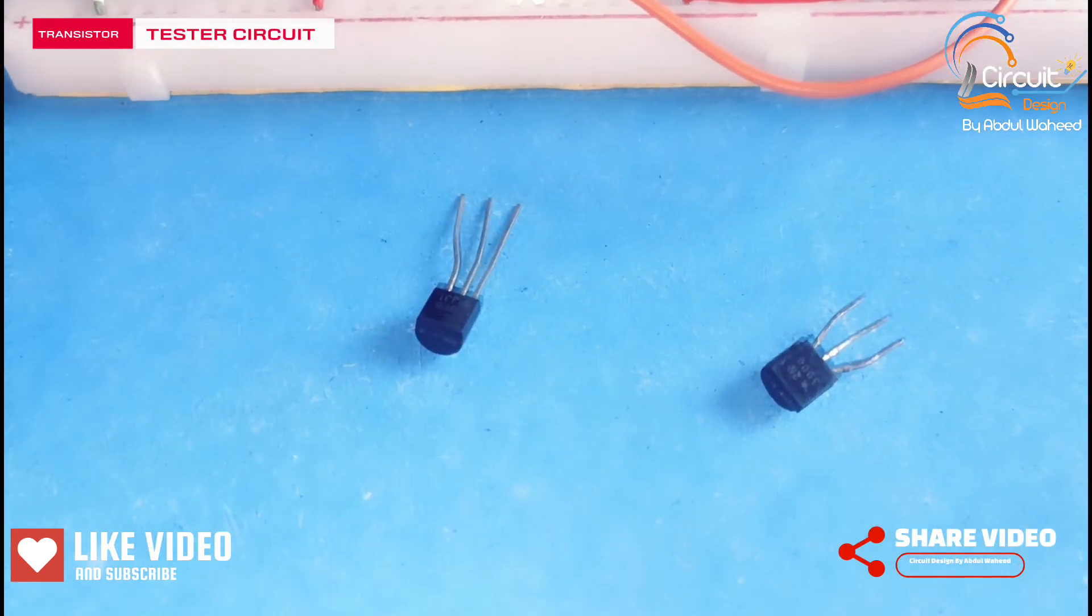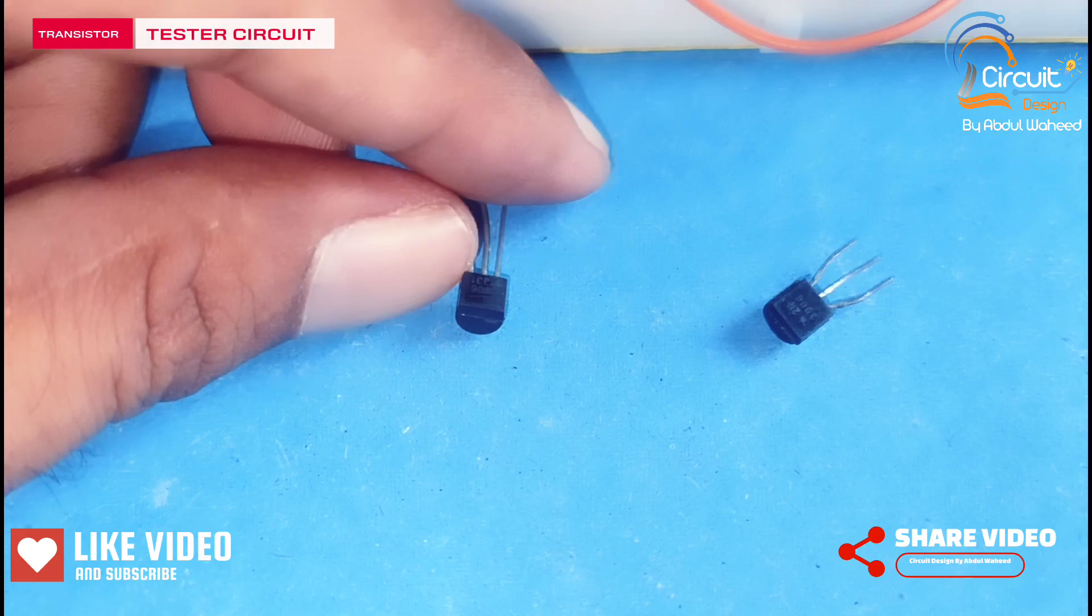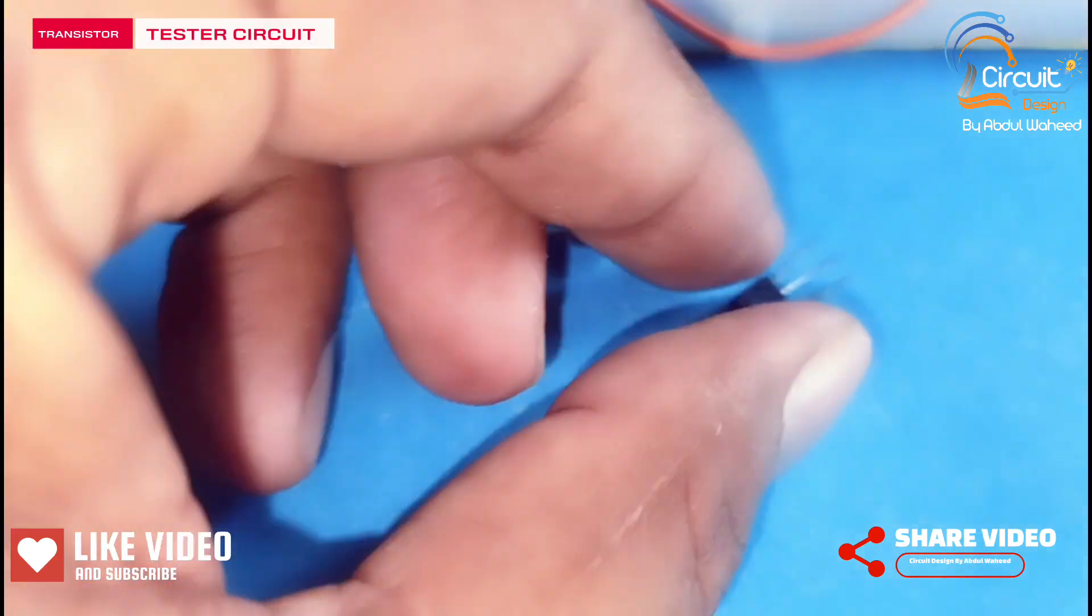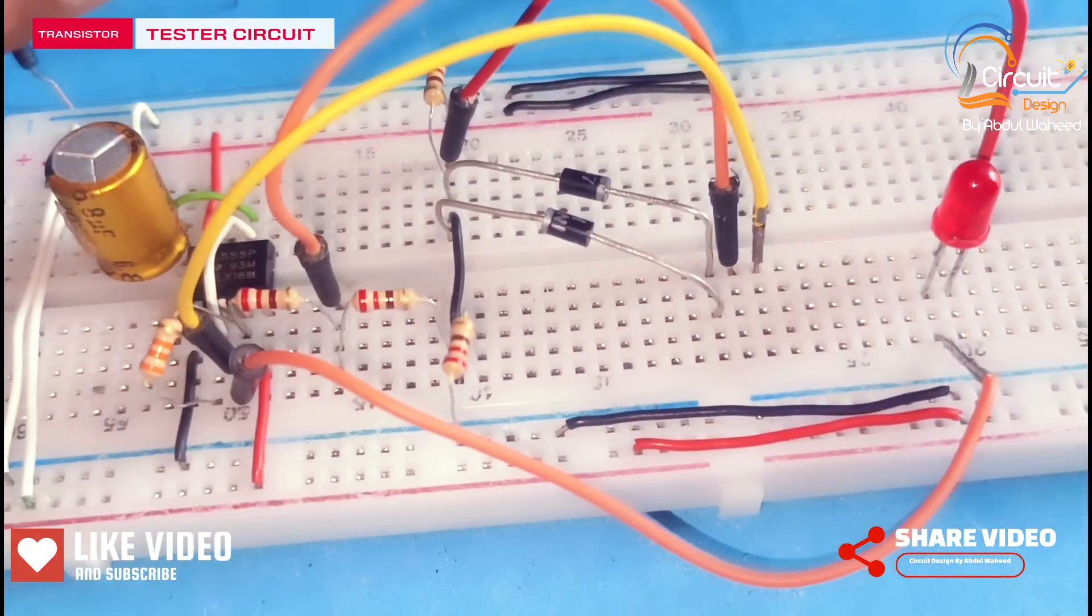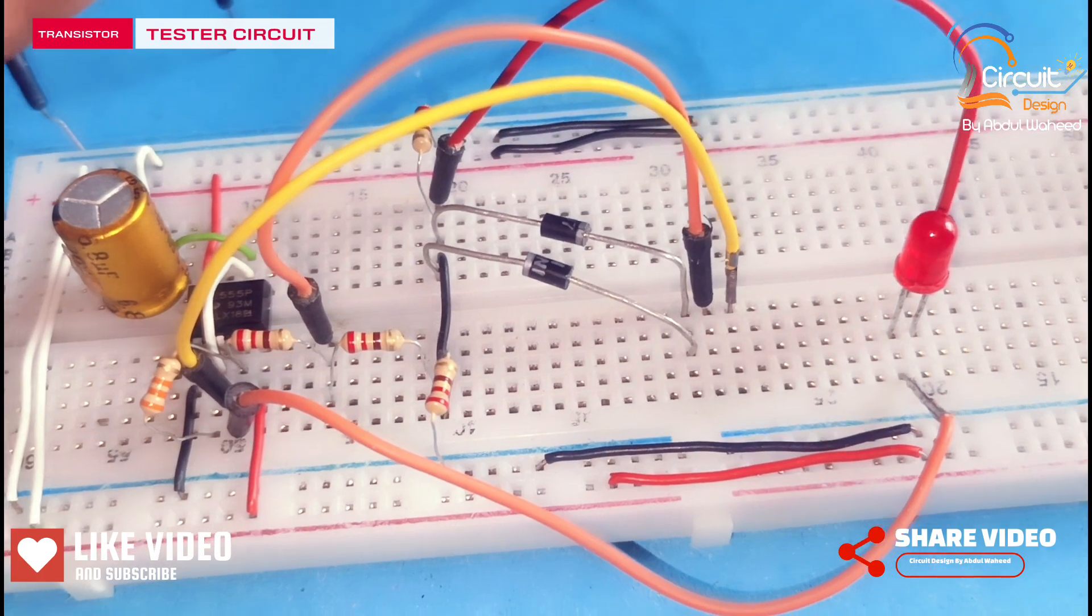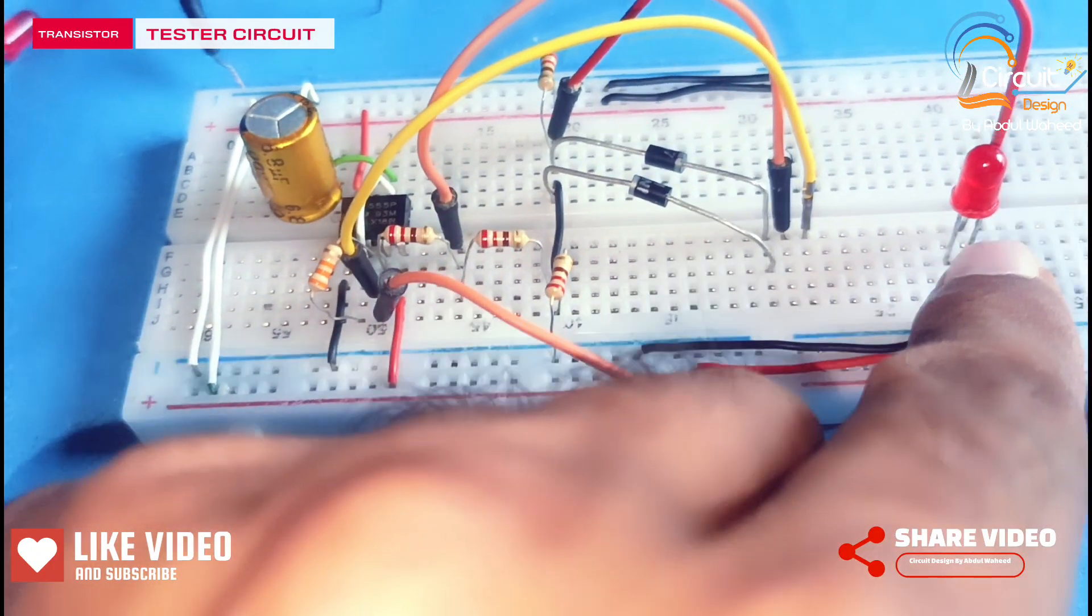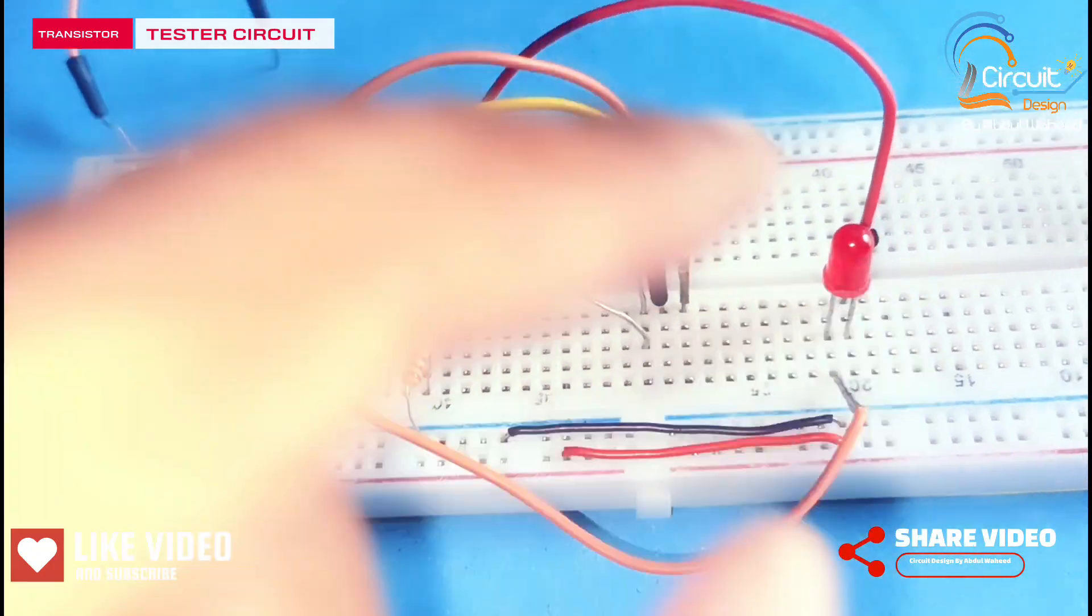I have two transistors, one is NPN and the other is PNP type. When I connect power supply to the breadboard, then the red LED will start blinking.